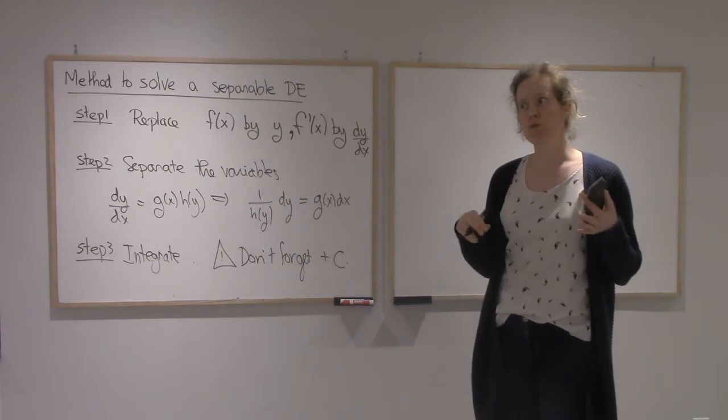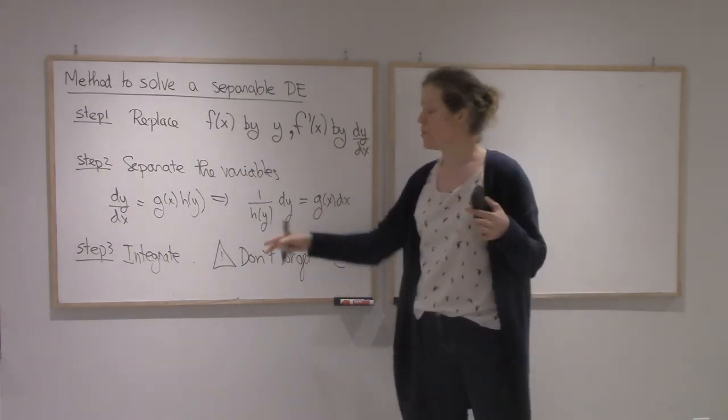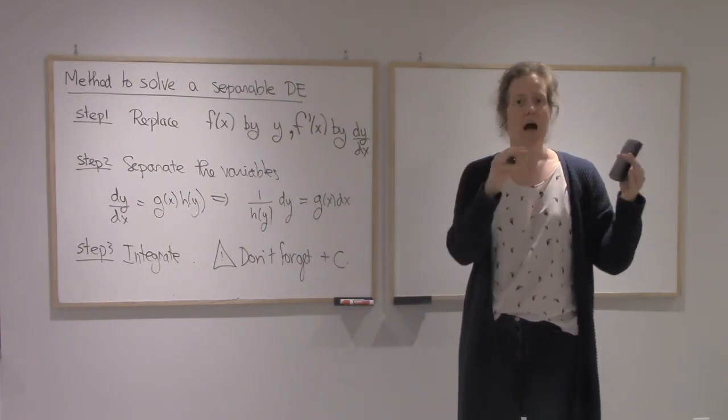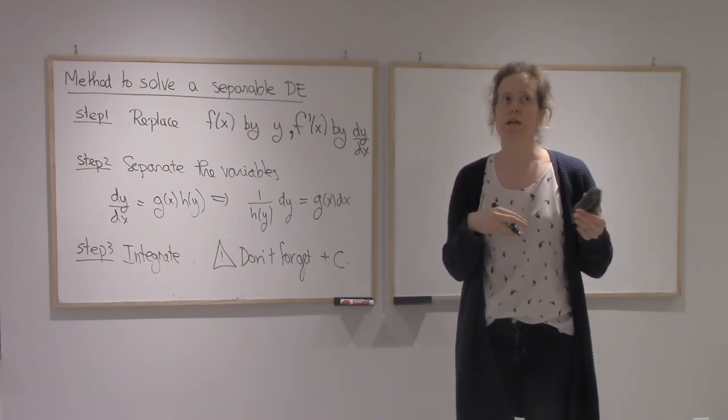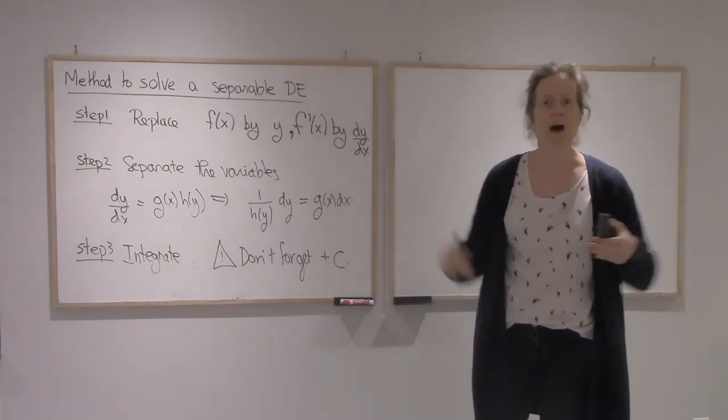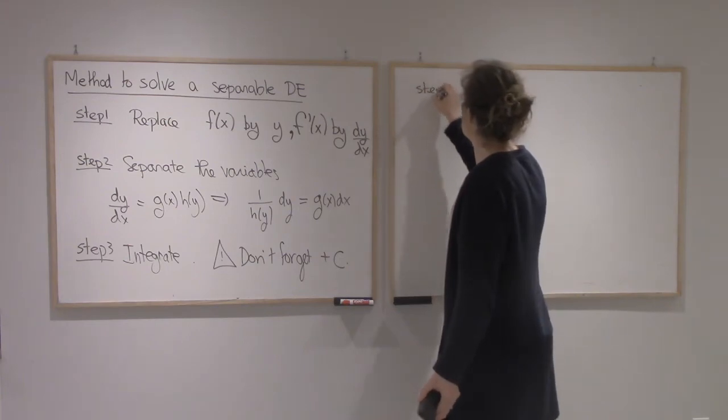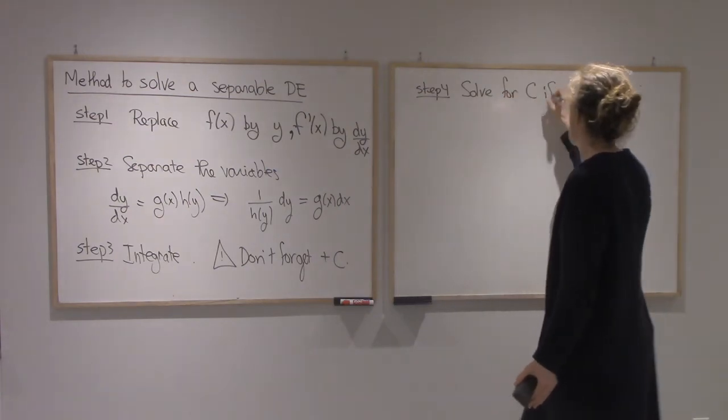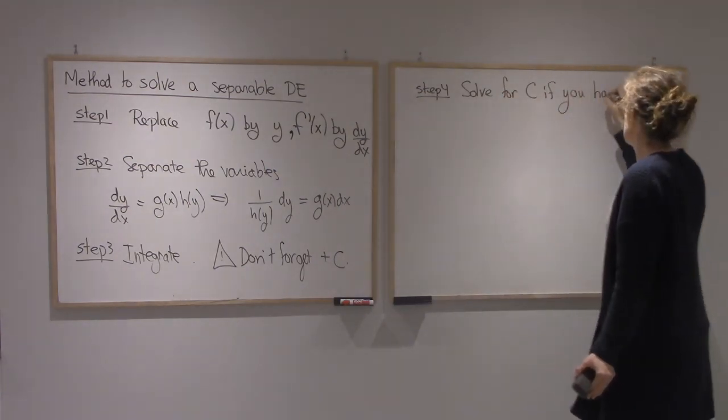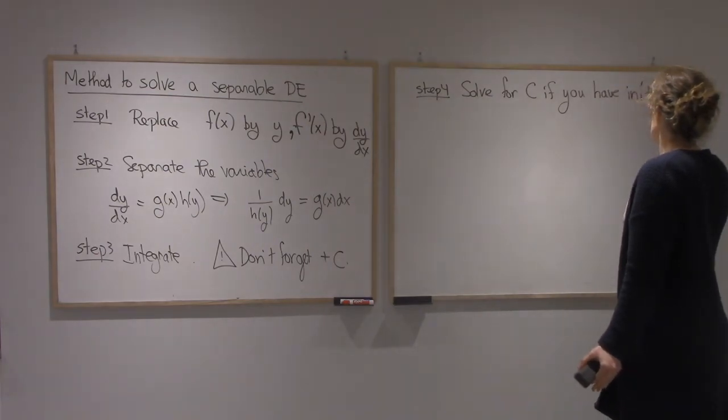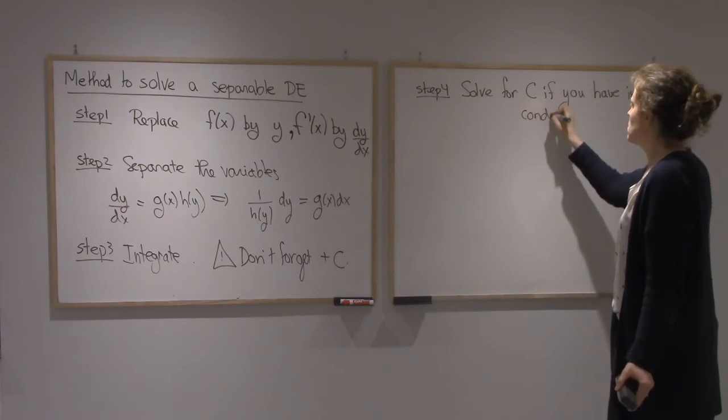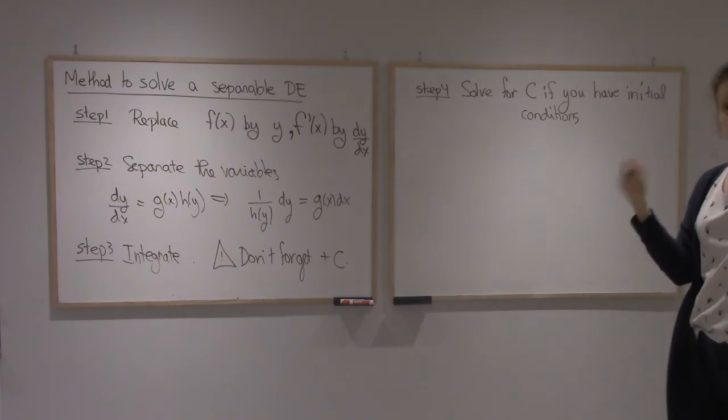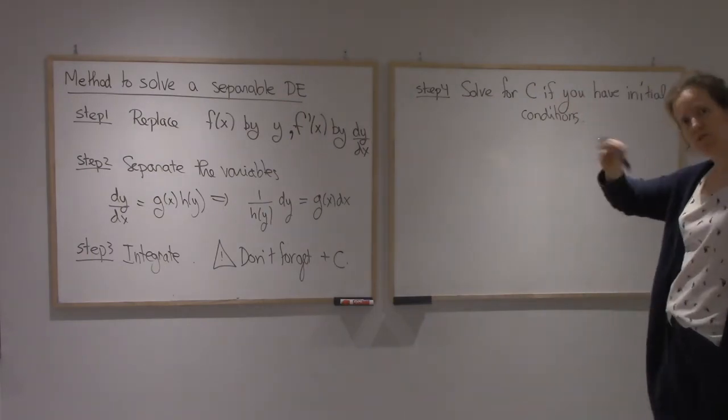So at this point, you don't have any derivatives anymore. You don't have any integrals. You just have blah equals blah. If you're given initial condition, if you're told that you need a particular solution with f of 3 equals 5, then this is the point where I would solve for C. You would skip that step if you're asked for a general solution, if you're not given any specific value for the function.